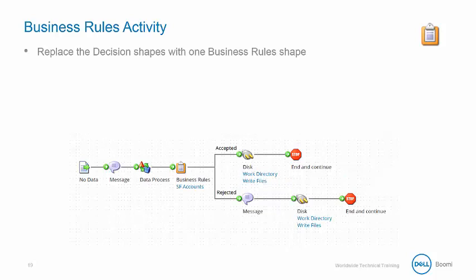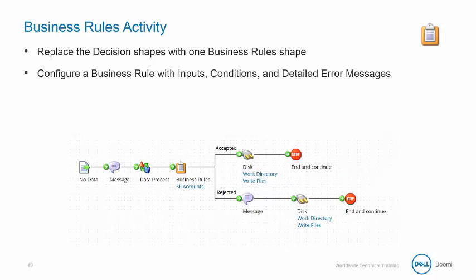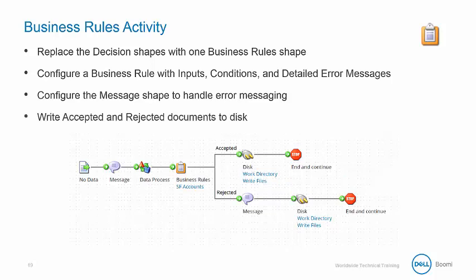To do this, we are going to replace the decision shapes with one business rule shape, configure a business rule with inputs, conditions, and detailed error messages. We are going to configure the message shape to handle flat file error messaging, and we will write accepted and rejected documents to disk.